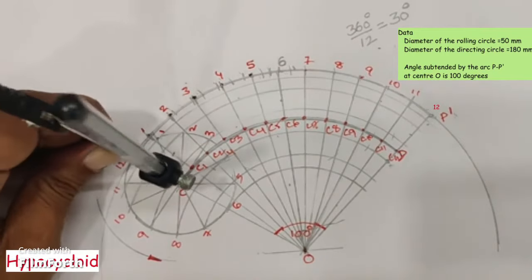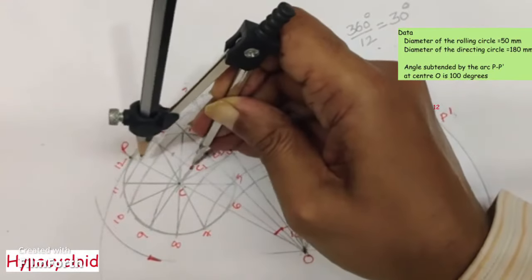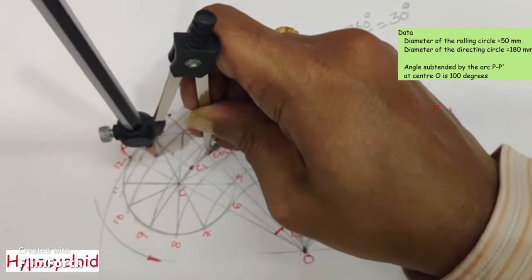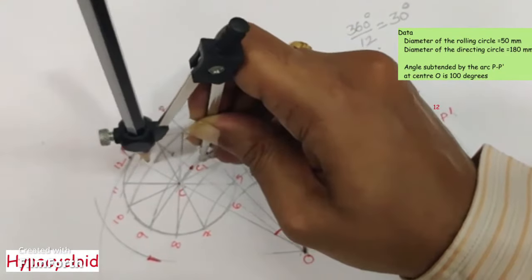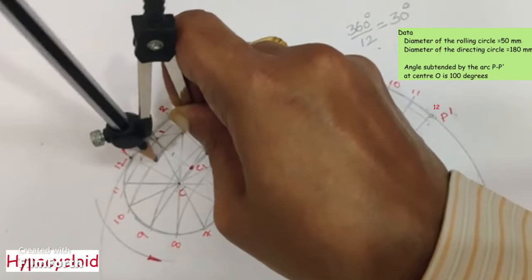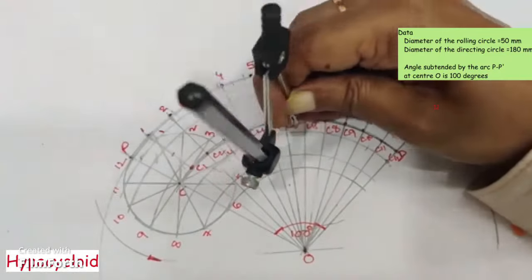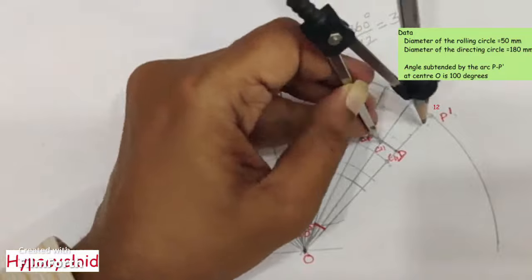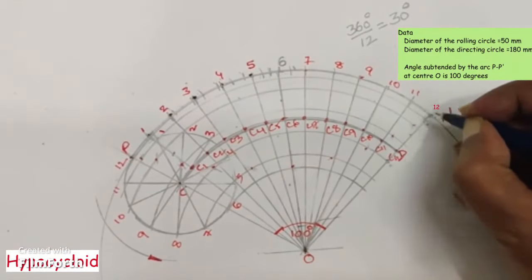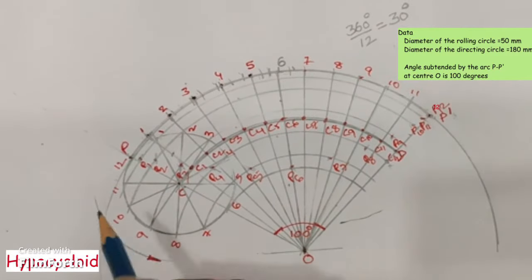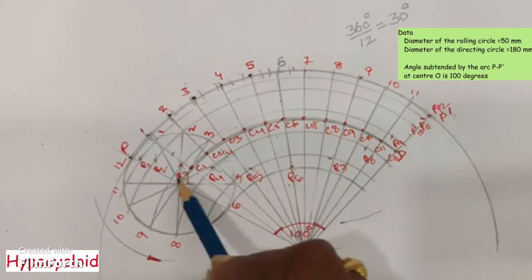Take CP as radius, with C1 as center, draw an arc on the first division arc to get point P1. Similarly, repeat the process with the same radius using centers C2, C3, C4, C5, etc., to generate points P2, P3, P4, P5, and so on. Then, passing through P, P1, P2, P3, P4, etc., draw a smooth curve.